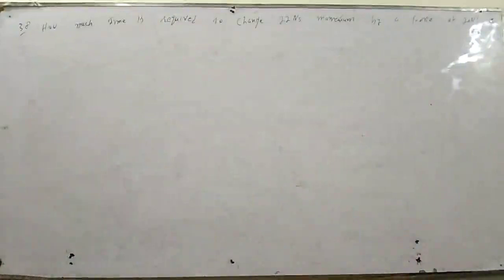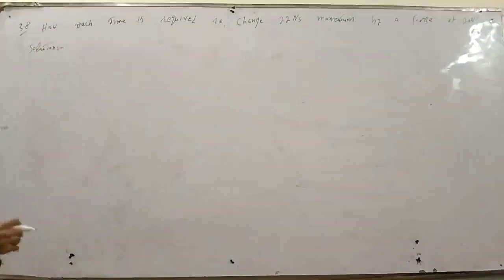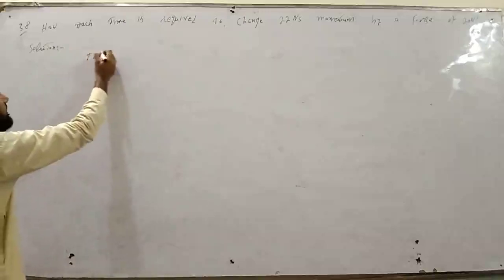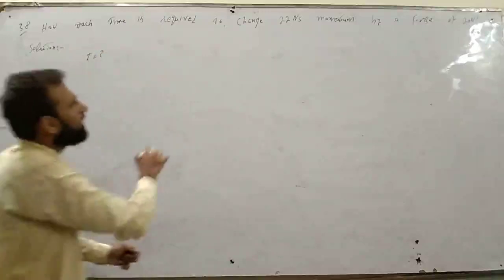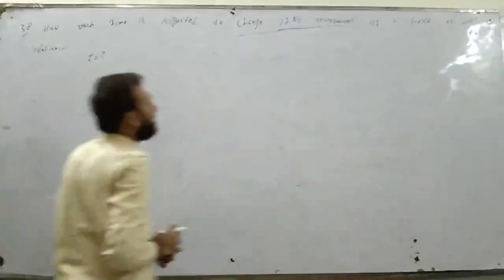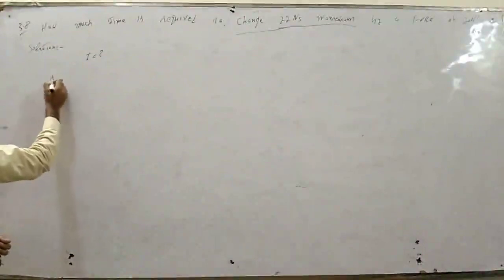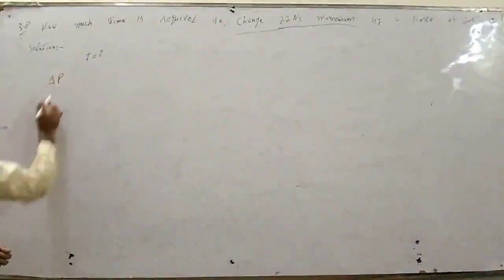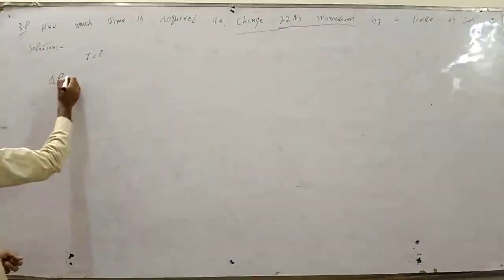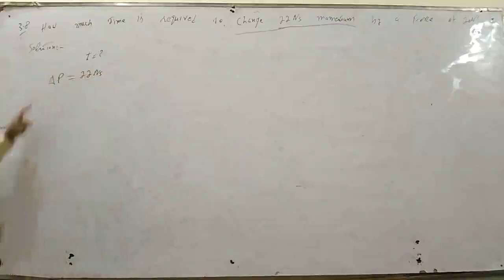Solution: how much time find करना है। Change in momentum दिया हुआ है - 22 newton second momentum। P से momentum होता है, यहाँ पे change in momentum है, del P। तो del P is equal to 22 N·s। यह del P है।